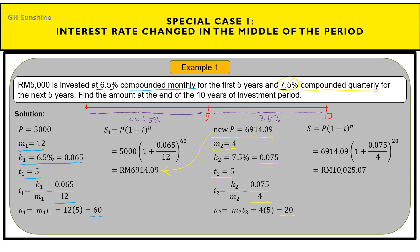That is the step-by-step method for calculating the future value or maturity value for compound interest when the interest rate changes in the middle of the period.